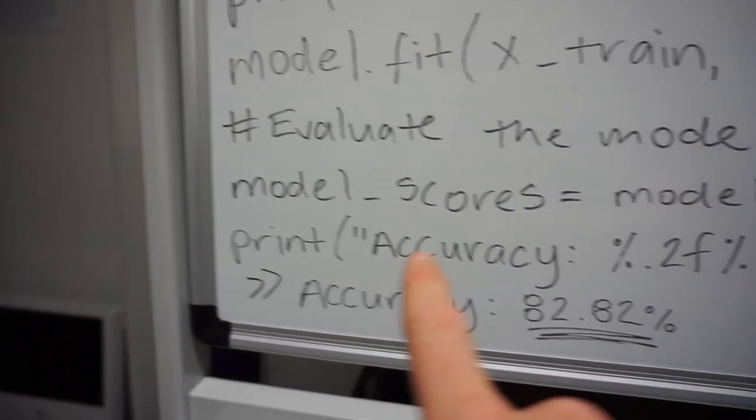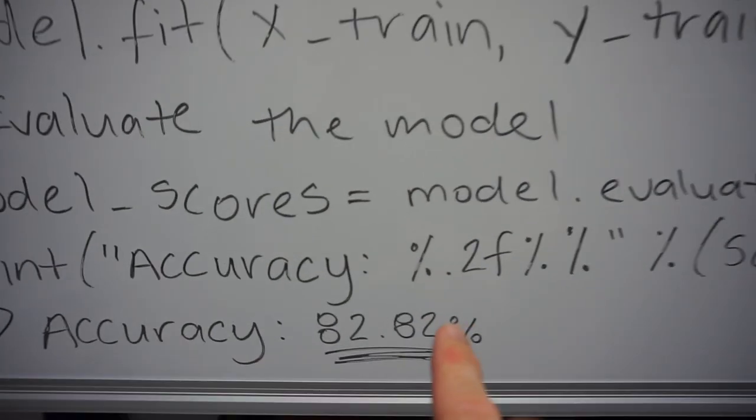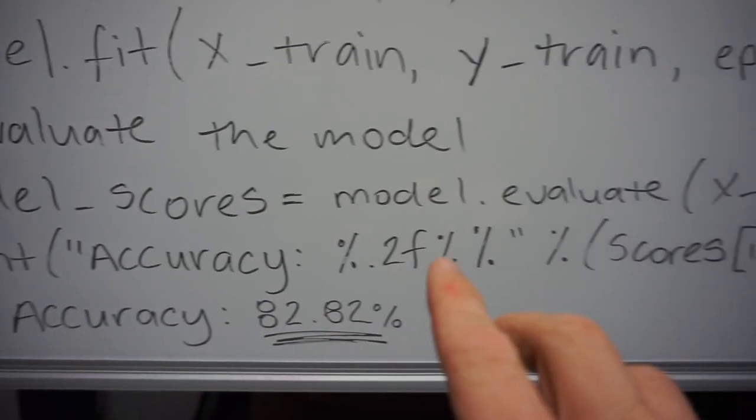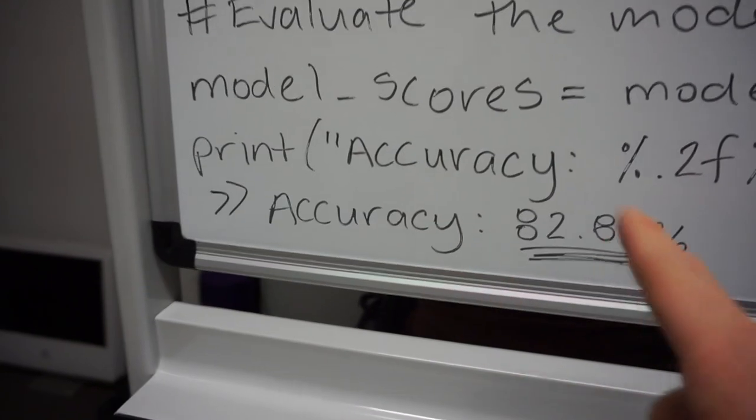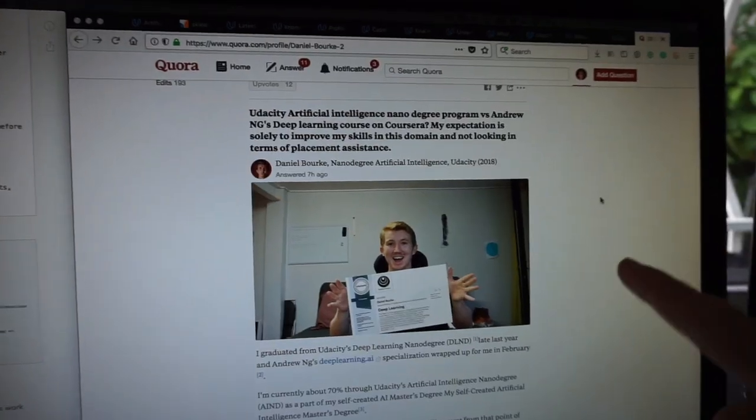We print the accuracy: scores[1] * 100, formatted to two decimal places. The result is 82.82%. That took about ten minutes to train, but just look at that — with that short piece of code, we achieved 82.82% accuracy predicting whether an IMDB movie review was positive or negative. You could extrapolate this to a bigger dataset. I think that's incredible for such a simple model — imagine what you can do when you expand it.